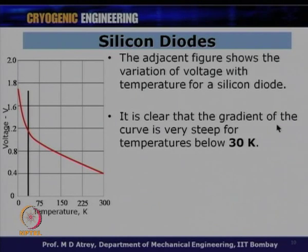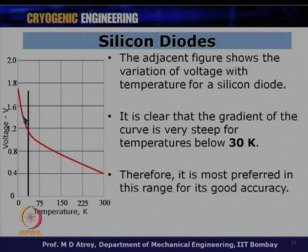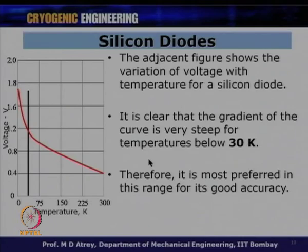The gradient of the curve is very steep for temperatures below 30 Kelvin, which means sensitivity increases significantly there. Therefore, silicon diodes are most preferred below 30 Kelvin for good accuracy compared to PT100 or thermocouples. At lower temperatures, silicon diodes are always preferred — at 4.2 Kelvin or liquid helium temperature levels.